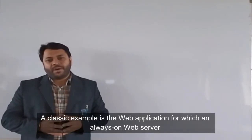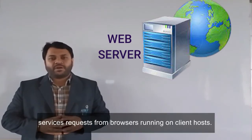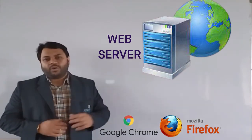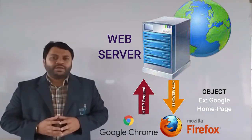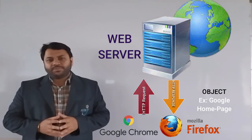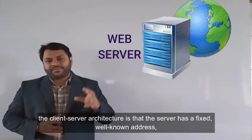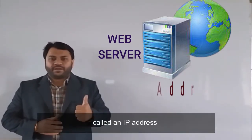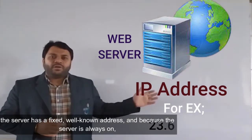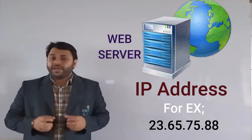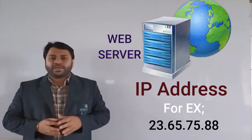A classic example is the web application, for which an always-on web server services request from a browser, browsers running on different client hosts. When a web server receives a request for an object from a client host, it responds by sending the requested object to the client host. The client-server architecture is that the server has a fixed well-known address called IP address, which we will see in other video. The server has a fixed well-known address and because the server is always on, a client can always contact the server by sending a packet to the server's IP address.